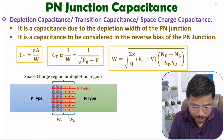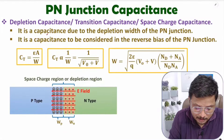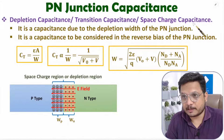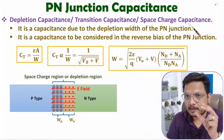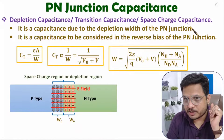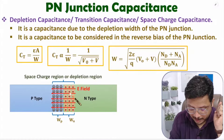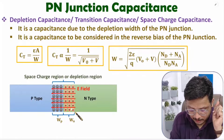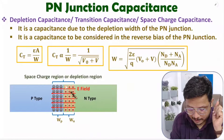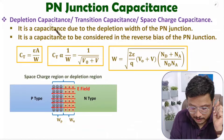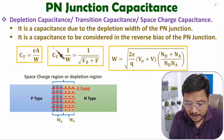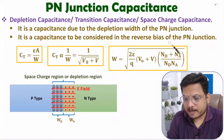Depletion capacitance is also known as transition capacitance as well as space charge capacitance. This depletion capacitance is there due to the width of the depletion region. In a p-n junction, at the junction there is a space charge region referred to as the depletion region. At the p-side there are negative ions, at the n-side there are positive ions. Depletion capacitance is considered with reverse bias of the p-n junction.